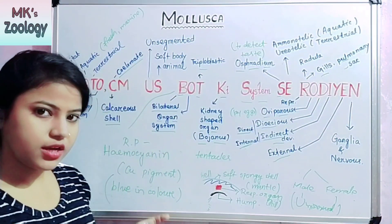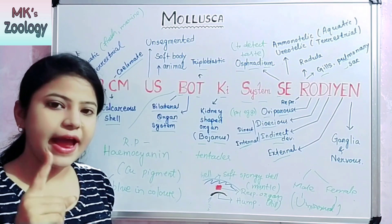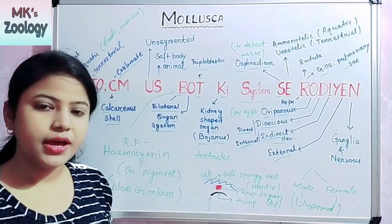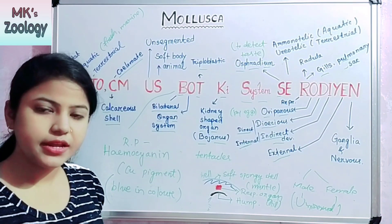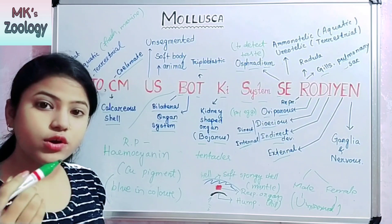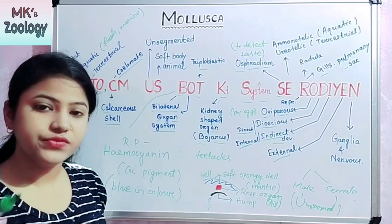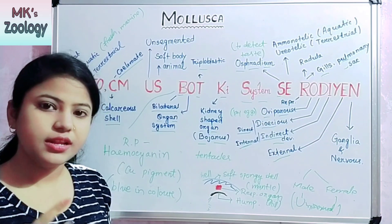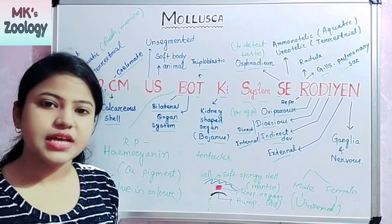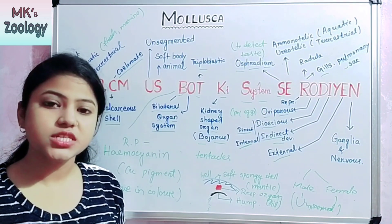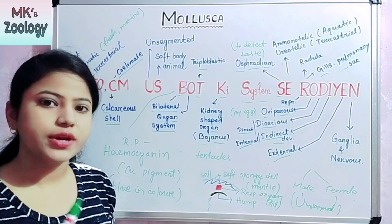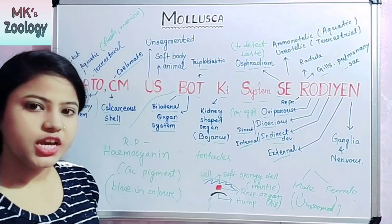B also means body, which has three parts: head, muscular foot, and visceral hump. Muscular foot is present in the lower part, and above it visceral hump is present. Above visceral hump, visceral mass is present. Above visceral mass, mantle is present. Above mantle, shell is present. The shell is of three types: external, internal, or absent. External example is snail or Pila; internal example is Sepia; and shell is absent in Octopus. Ki means kidney-type organ present for excretion, known as Bojanus in Mollusca.